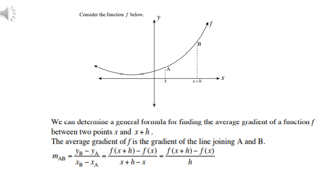The change in y comes from substituting x into the equation, which is why we have f(x + h) minus f(x). In the denominator, the x of B is the bigger value x + h, and the x of A is the smaller one, x. We still subtract, and therefore we end up with [f(x + h) - f(x)] / h. This is a very important formula because we will use it later when we do derivatives by first principles.